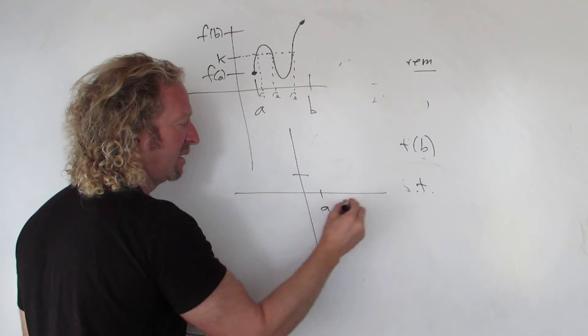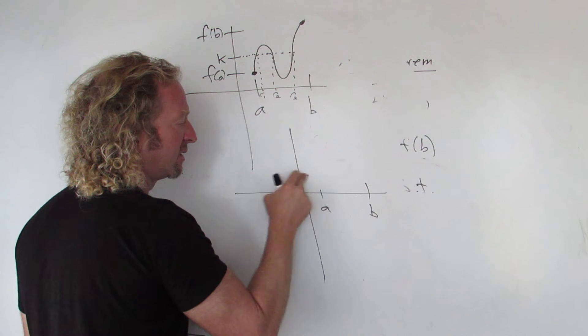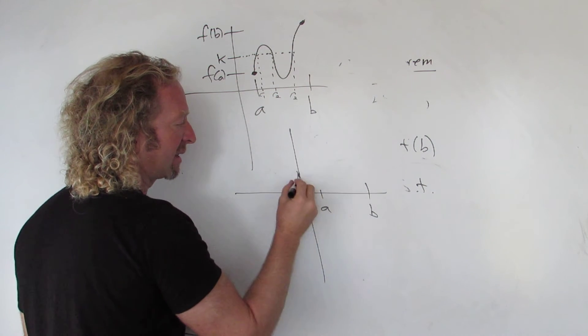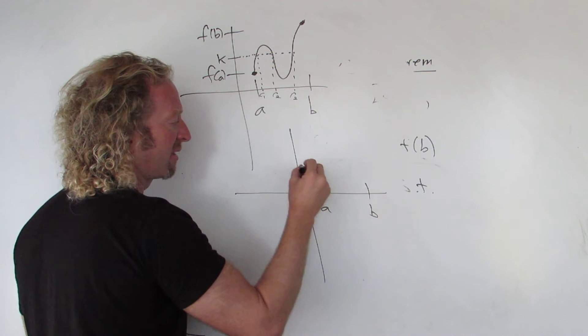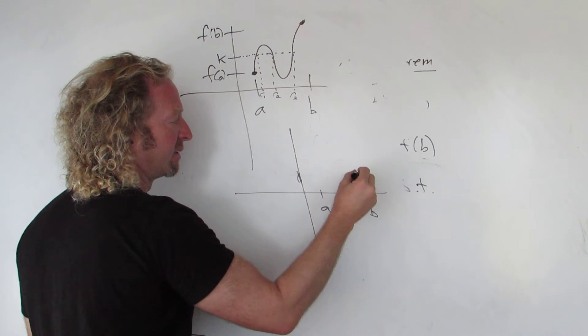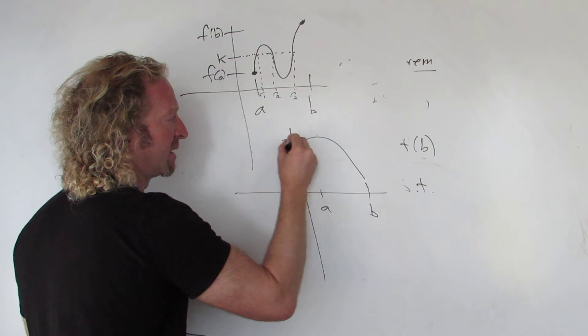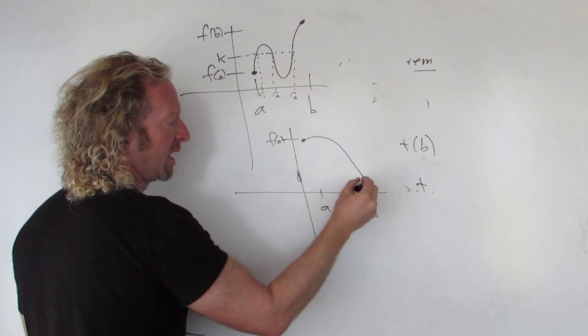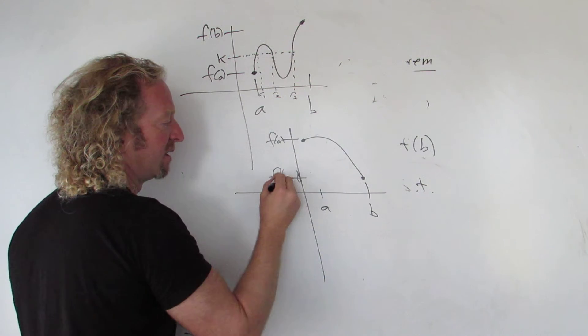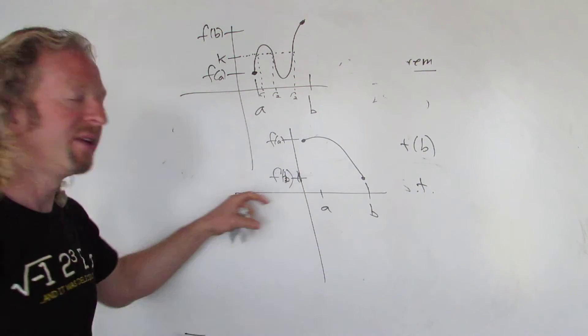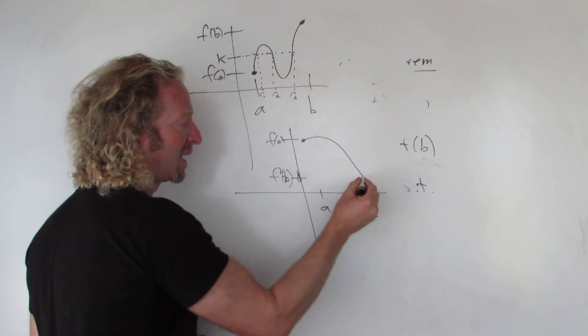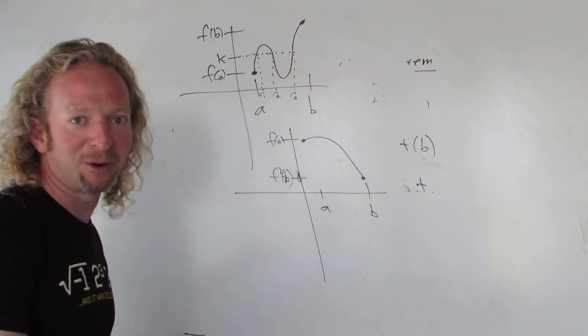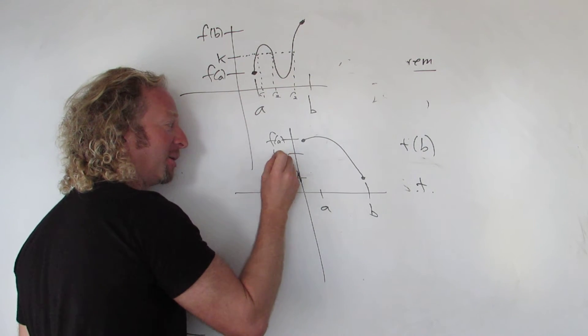Let's do another picture. Here's A, here's B. Let's make this F(A) this time, and let's make this F(B). So this time you see the case where F(B) is smaller than F(A), right? Let's see if we can break the theorem. Well, we can't, right? We can't break it because it's a theorem - it's true. Say I pick a K here.